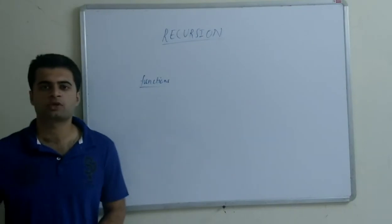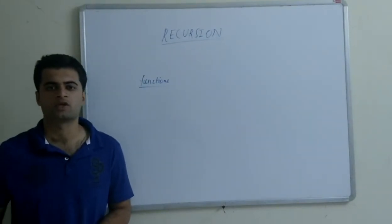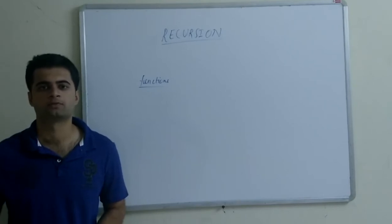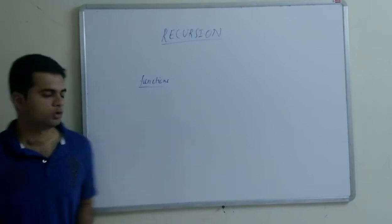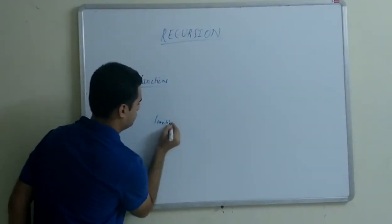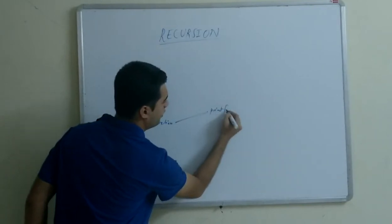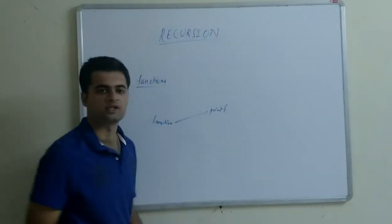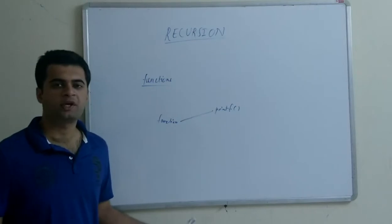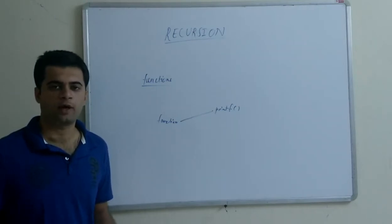Functions help us to divide the code into different modules, so that the code becomes more readable. For example, printf function in C helps us to print any string, character, or any special symbol across the keyboard.